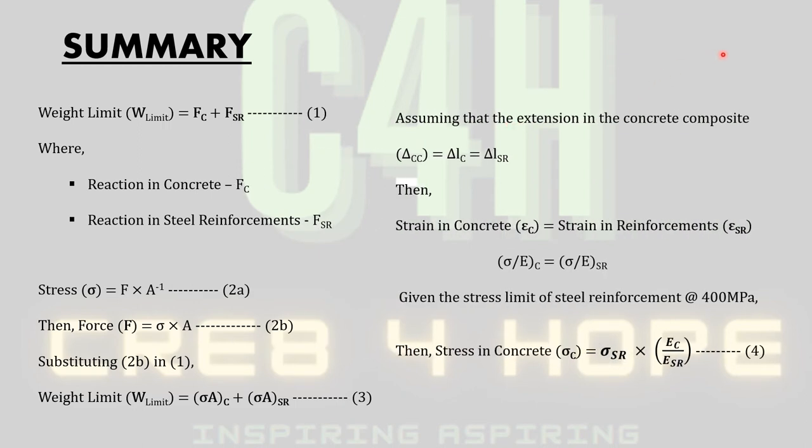If we assume that the measure of extension or deformation is the same in all the materials that constitute the concrete composite, then the extension in the concrete composite is equal to the extension in the concrete, which is equal to the extension in the steel reinforcements.